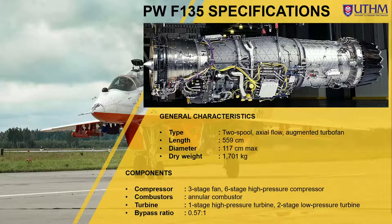It is made up of a three-stage fan and a six-stage high pressure compressor for its compressor system, an annular combustor for its combustion system, a one-stage high pressure turbine and a two-stage low pressure turbine for its turbine system, and a bypass ratio of 0.57 to 1.